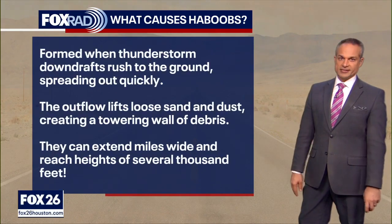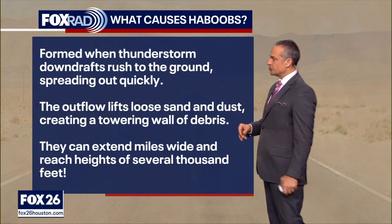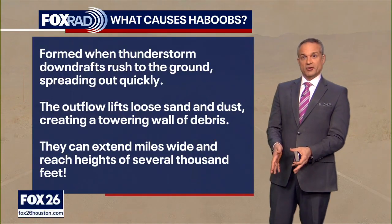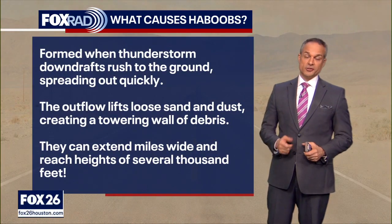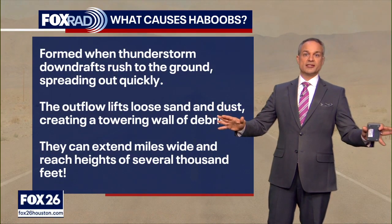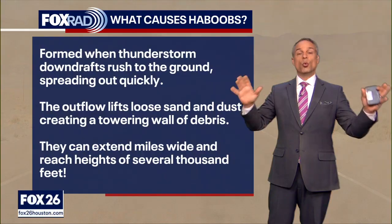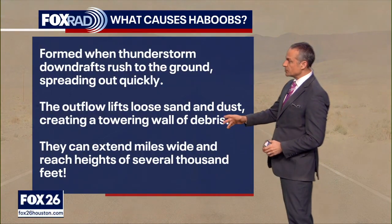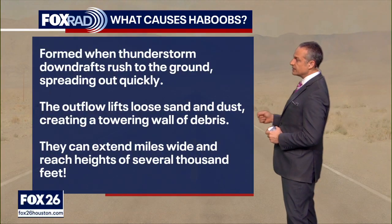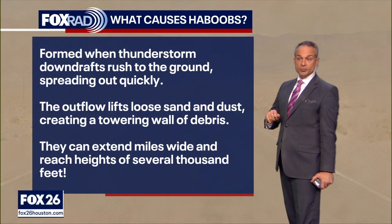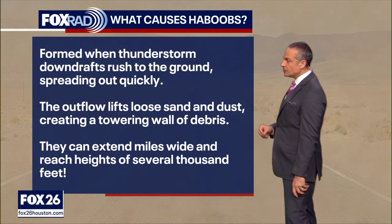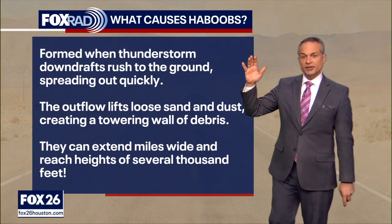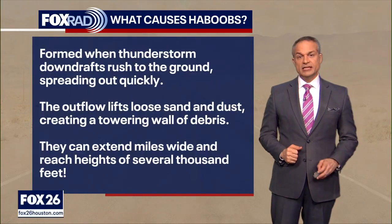What causes haboobs? They're formed when thunderstorm downdrafts quickly push air onto the ground. The ground is very dusty in the desert, especially if it hasn't rained there, and it lifts that dust up and creates a wide wall of dust and sand that blows out in all directions. The outflow lifts loose sand and dust, creating a towering wall of debris that can be pretty hazardous. They can extend miles wide and reach several thousand feet into the sky, creating near-zero visibility. With 50 or 60 mile per hour winds blowing sand and dust in your eyes, that could be a big problem.